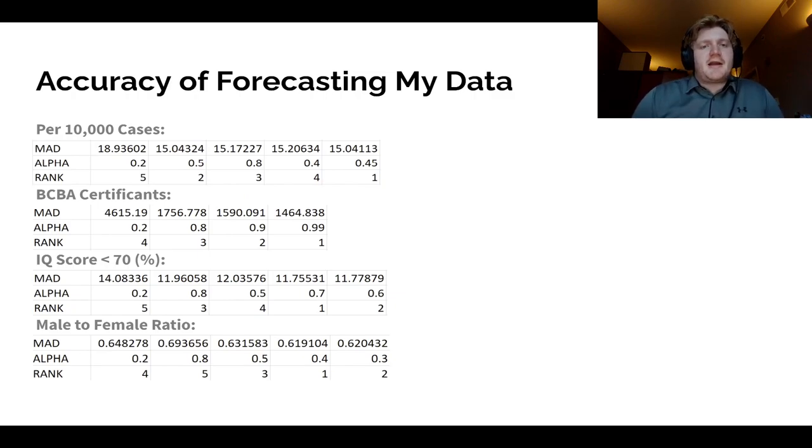So here is the accuracies of my forecast using simple exponential smoothing. And I have the alphas listed and the rankings. You can see on the BCBA certificates, I kind of had a thought that I could use the highest possible alpha without crossing one and be able to have the best possible forecast. So I just stopped it there. But with the other ones, I pretty much followed the algorithm that I made up.